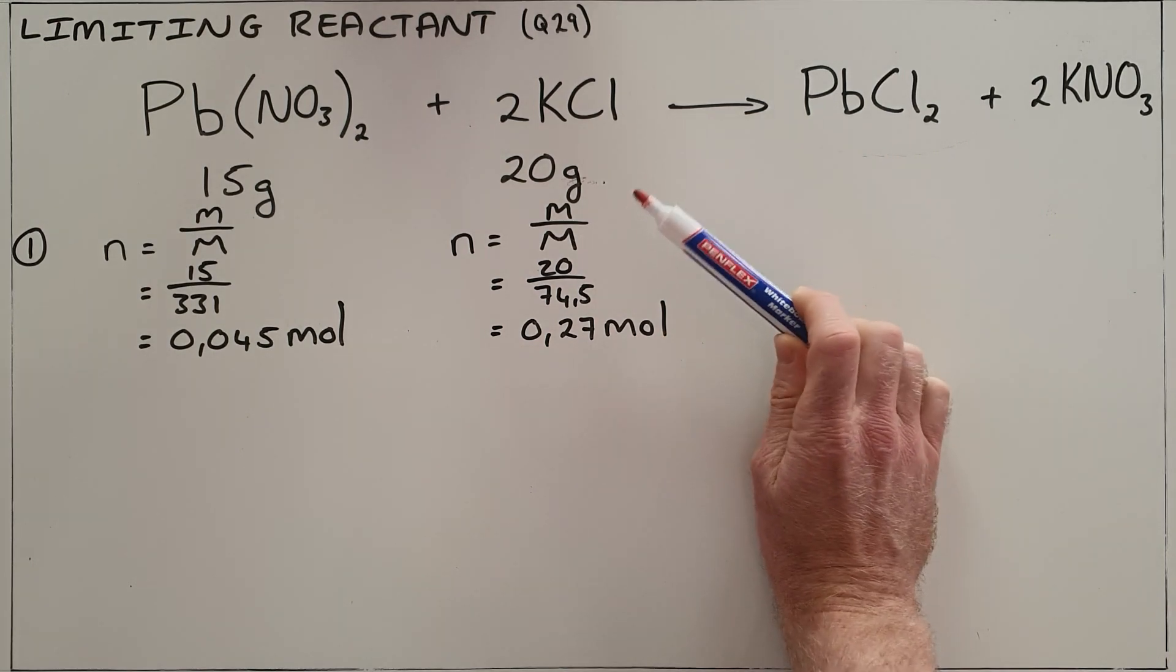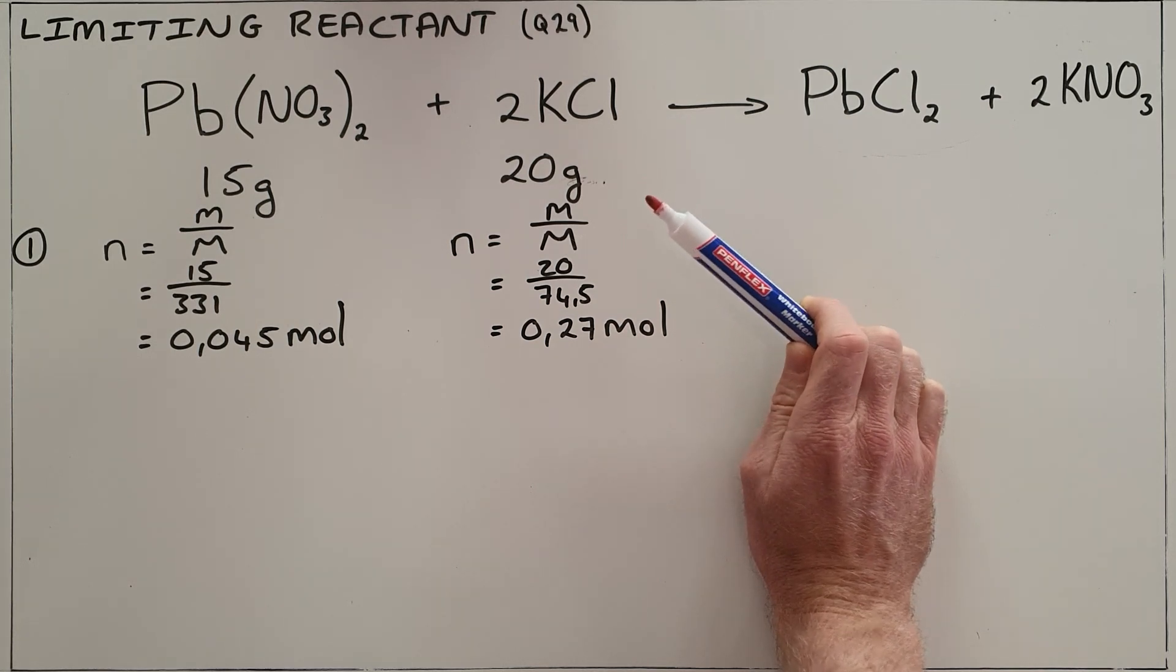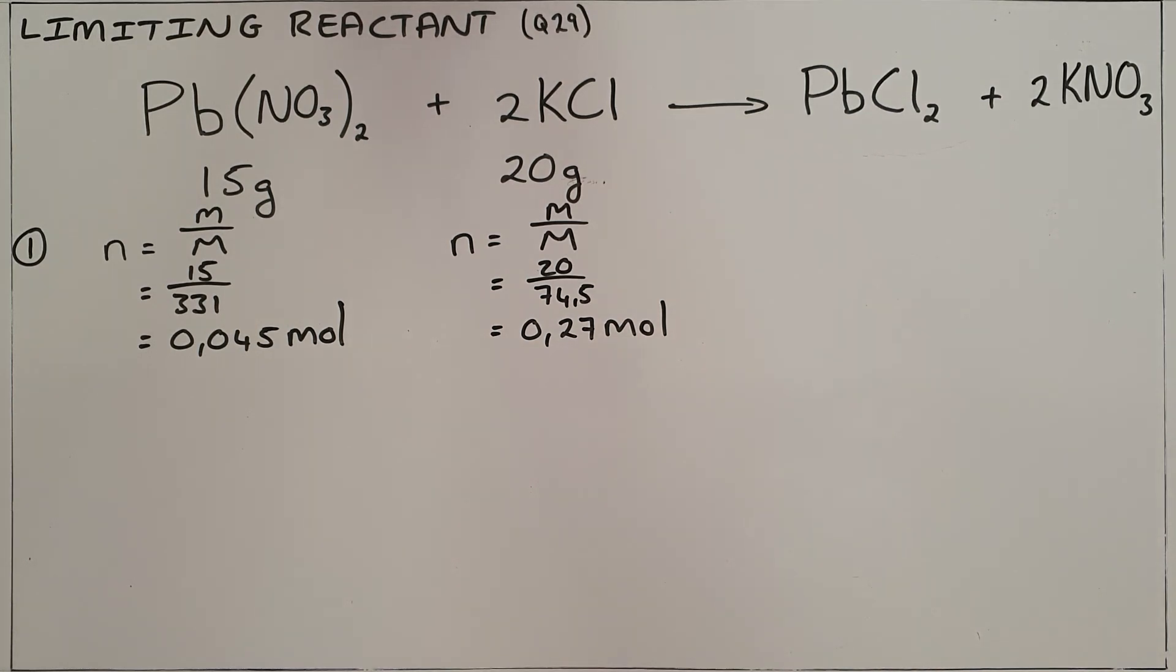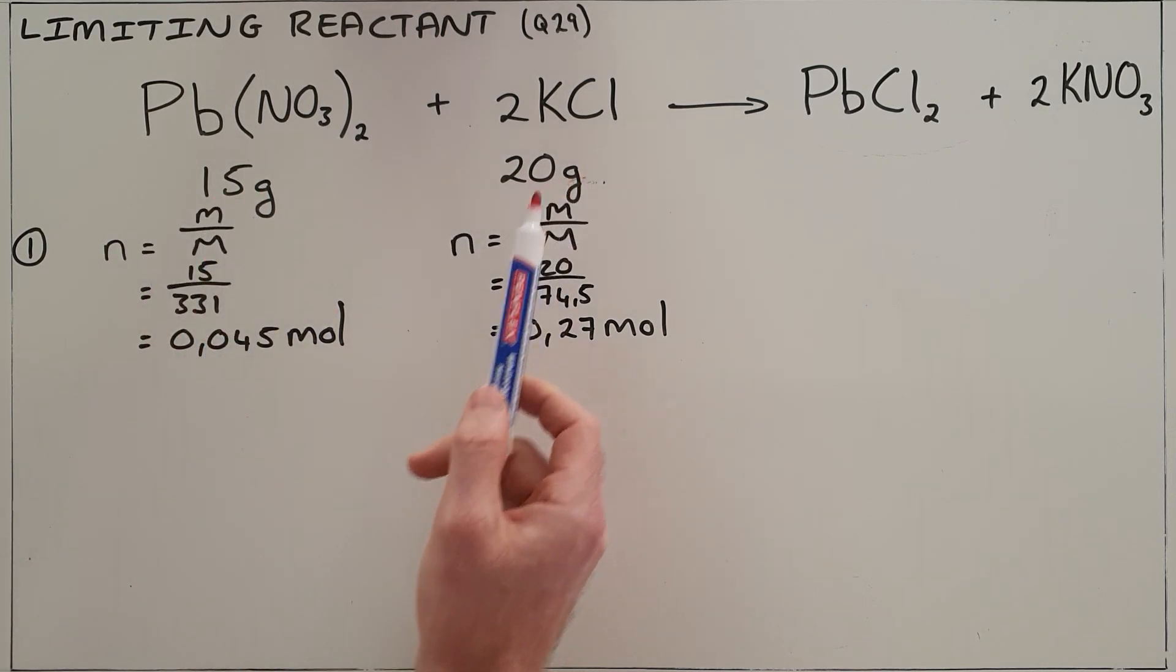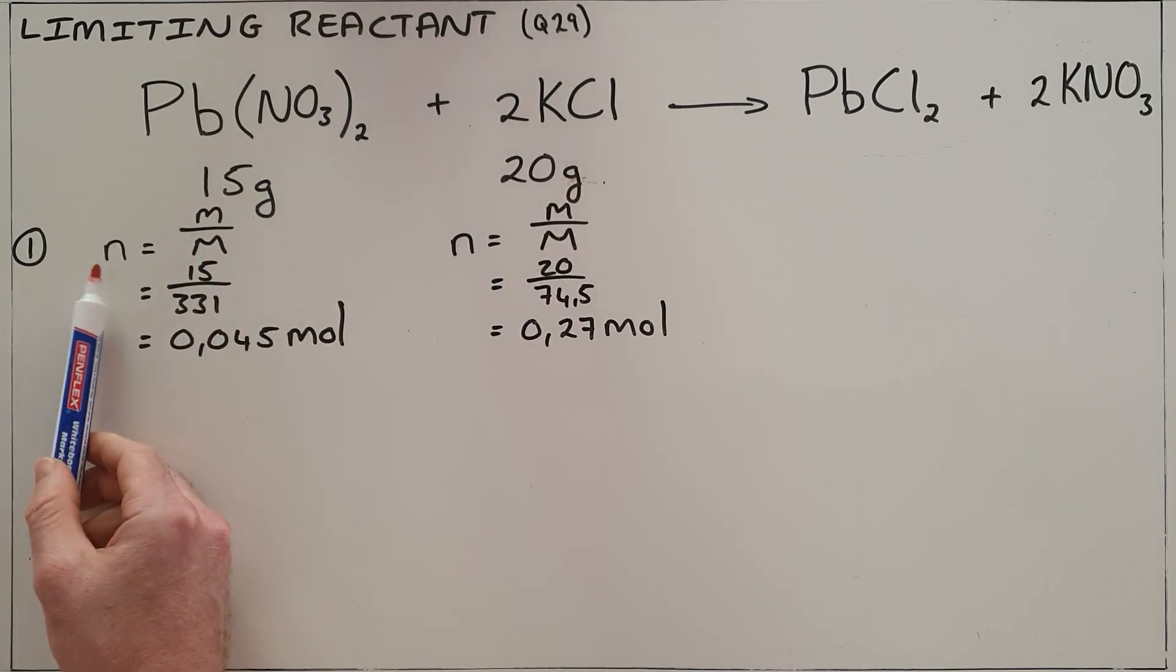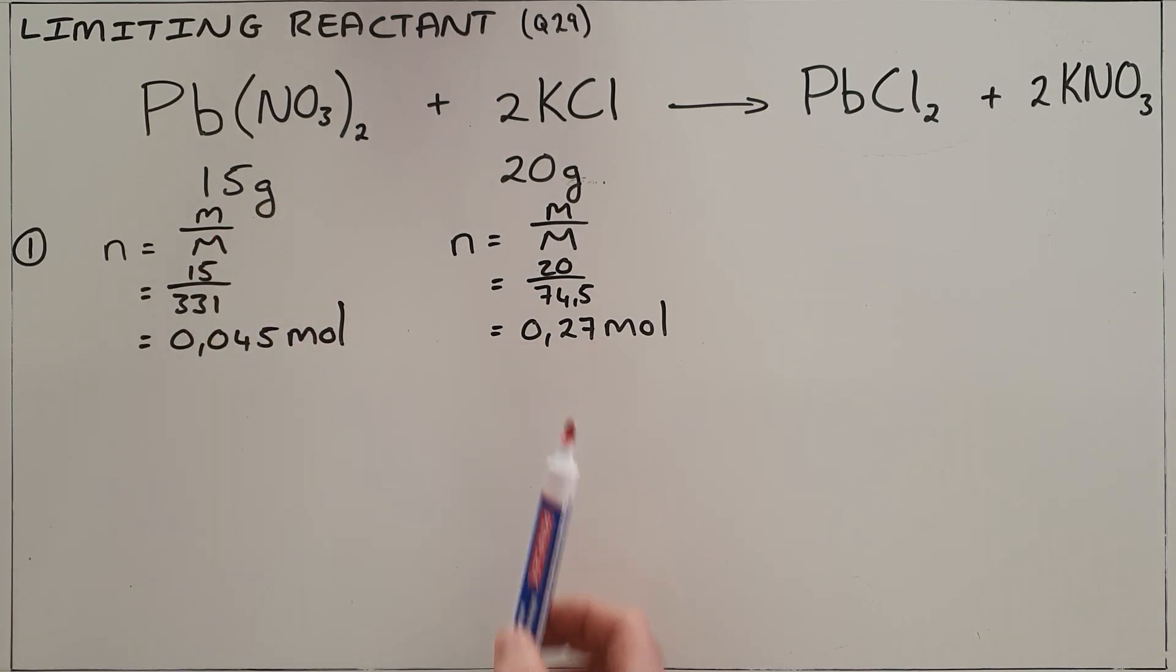what mass or amount of the excess reactant remains. Obviously, once the limiting reactant has run out, there's still going to be some of the other reactant that remains. We cannot compare masses of different substances to each other, so our first step is always to convert our mass of substance into a number of moles.